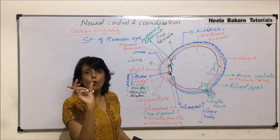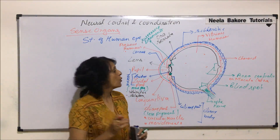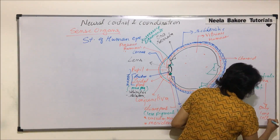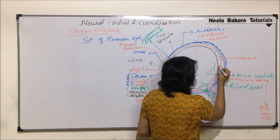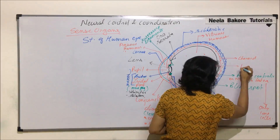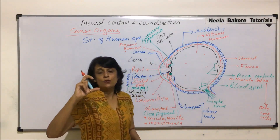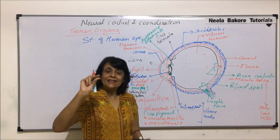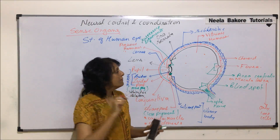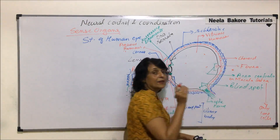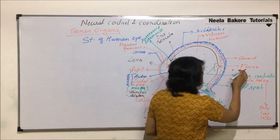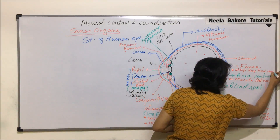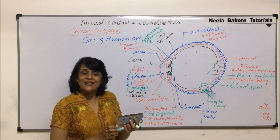The macula lutea is the portion where there are only cone cells. The depressed area we are seeing here is known as the fovea. The area is known as macula lutea or area centralis, which has only cones, and the depression within it is called the fovea. This is the point where the sharpest image is formed, specifically for sharp daytime vision.